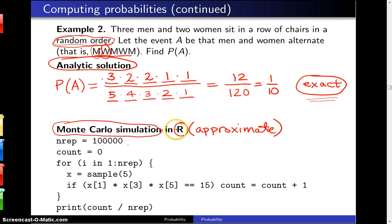What we're going to do is we're going to write this in the freeware R, and NREP is originally set to 100,000. That says this experiment of seating three men and two women in a row of chairs is going to be conducted 100,000 times.